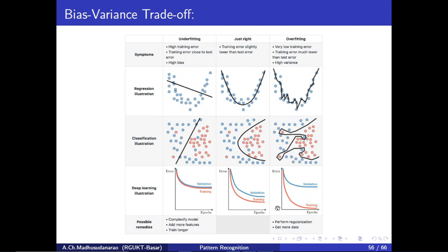So we need to maintain just-right fit models. We should not go for very high complex or very low complex models. There should be a trade-off between bias and variance. Underfitting is high bias; overfitting is high variance. There should not be too much high bias or too much high variance — there should be a trade-off. In the just-right fit, bias and variance are both moderate.